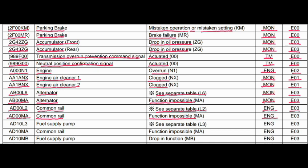Code AD00MA. Where is the problem? Common rail. What is the problem? Function impossible. Engine control is related to this fault, and the action code is E03.